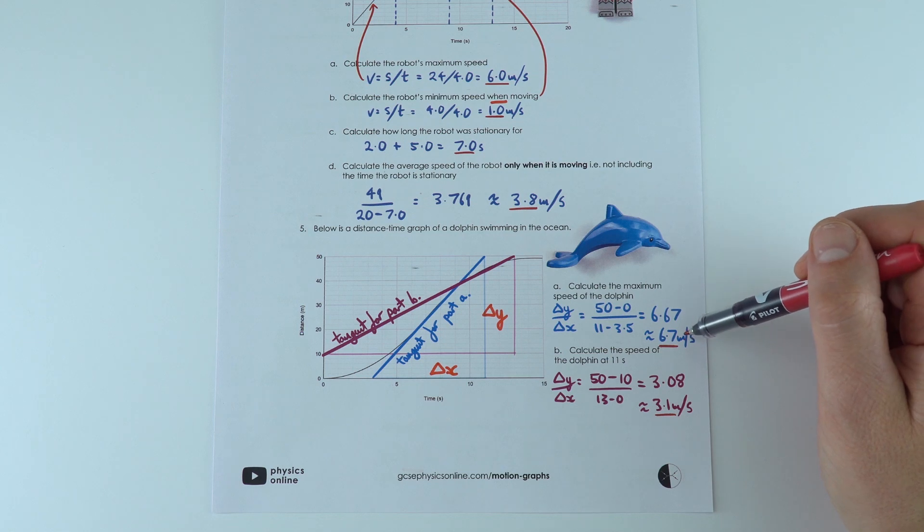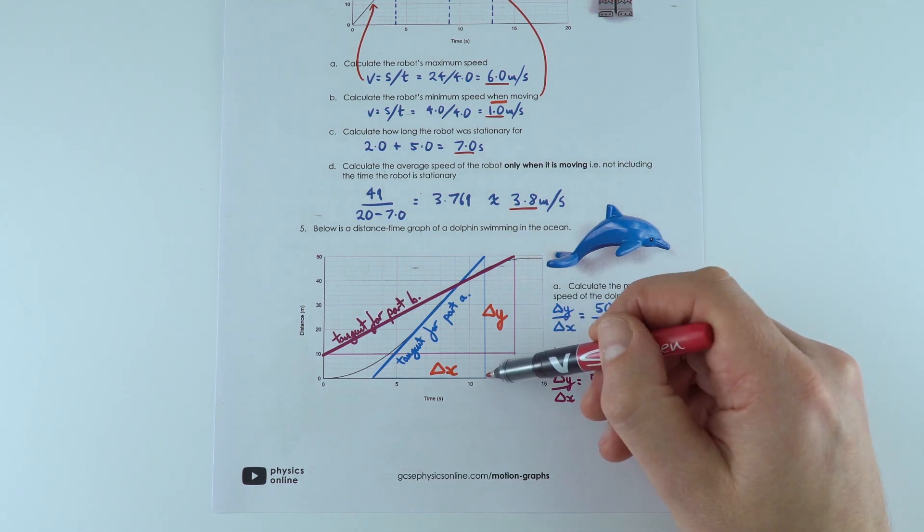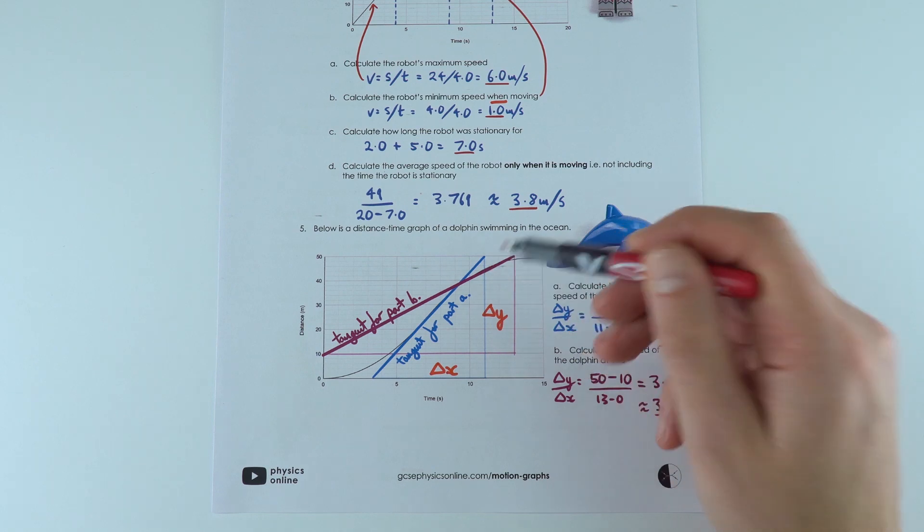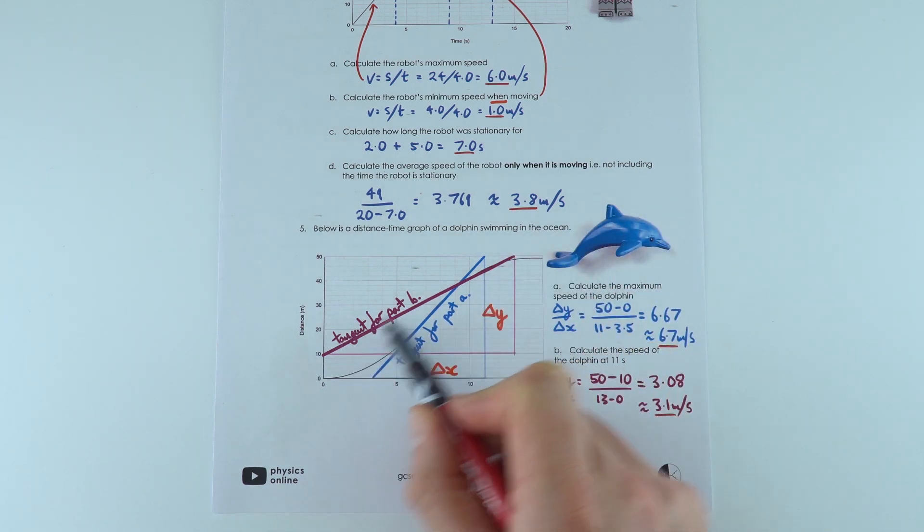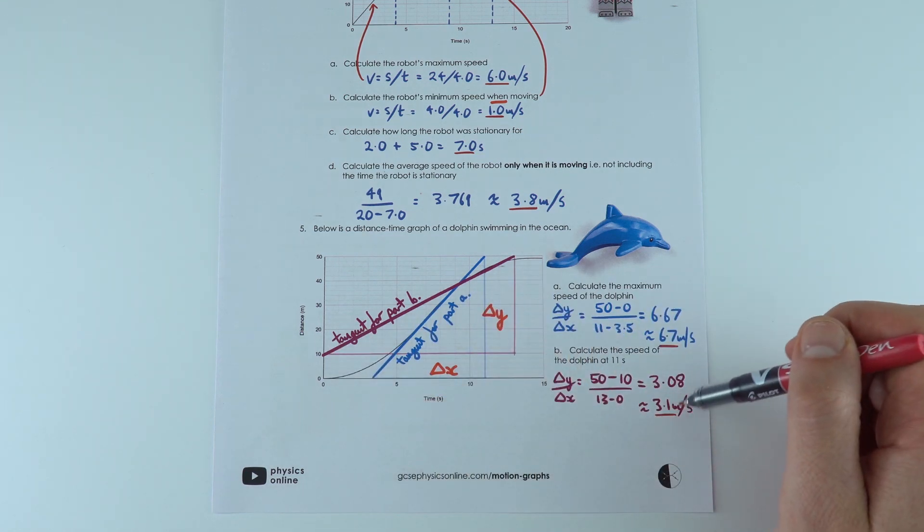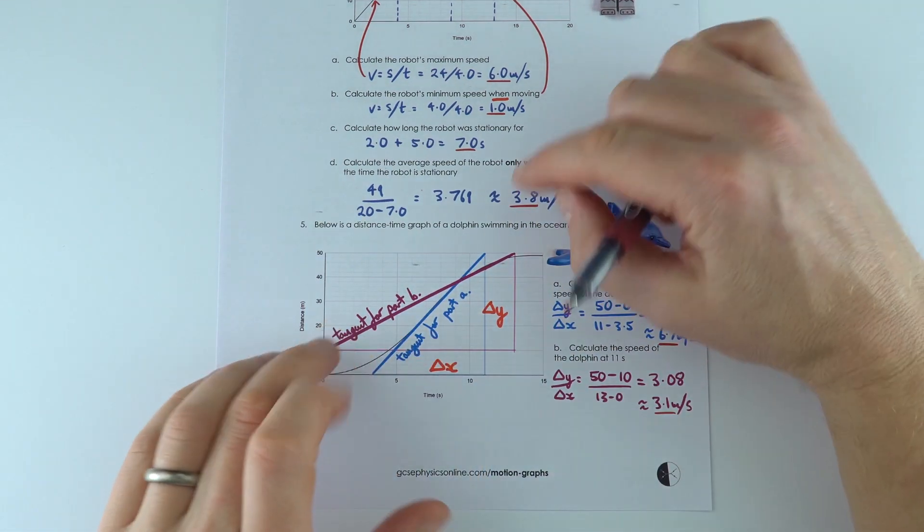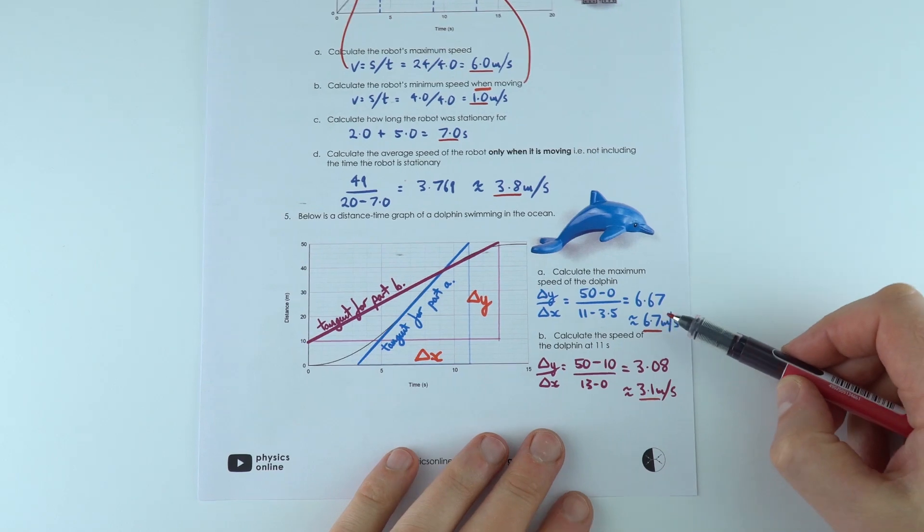But the speed of them at 11 seconds, so at this point on the graph, is the line in purple or the kind of ready-purple over here. Here, the tangent for this part of the line gave a gradient equal to 3.1 meters per second. So this one here, quite an advanced skill—there's not just one answer.